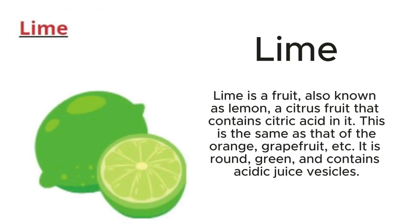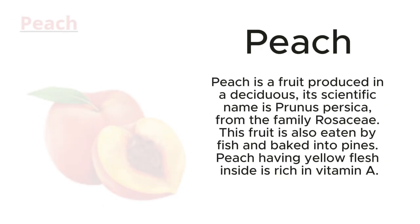Lime: Lime is a fruit, also known as lemon, a citrus fruit that contains citric acid in it. This is similar to the orange and grapefruit. It is round, green, and contains acidic juice vesicles.